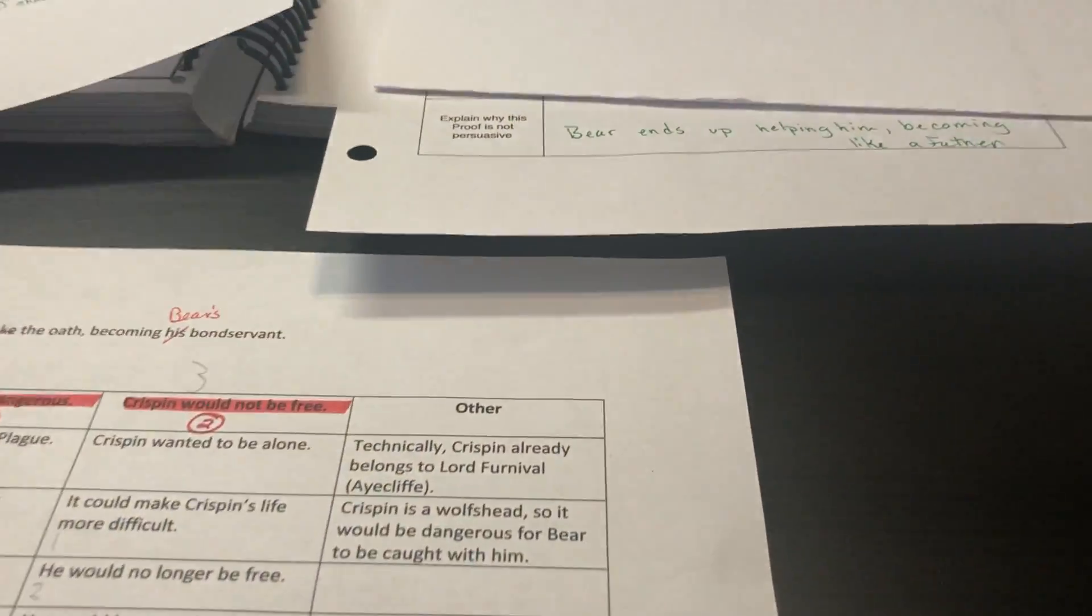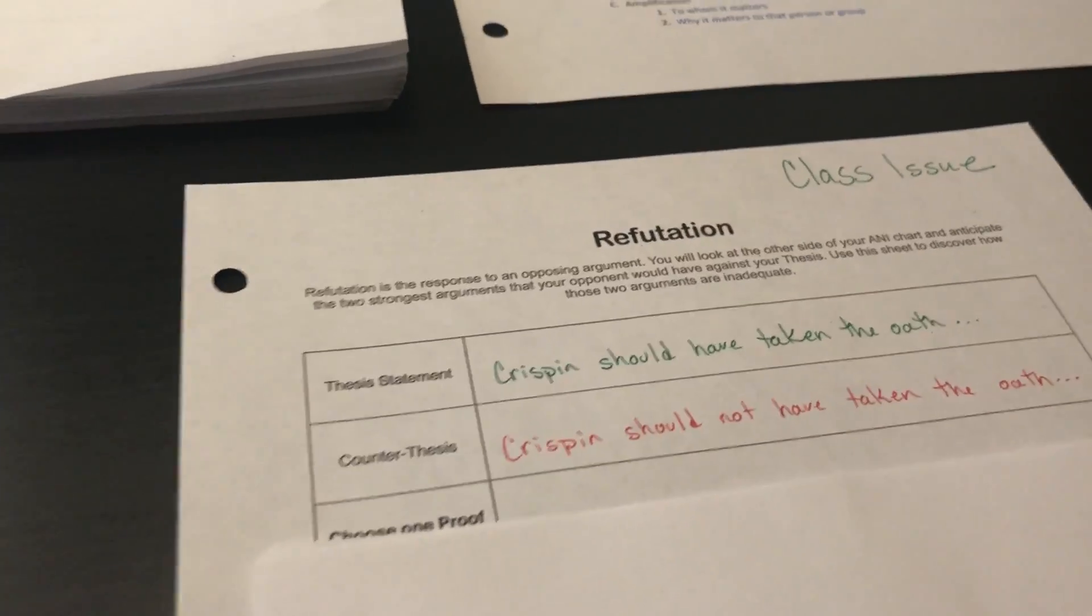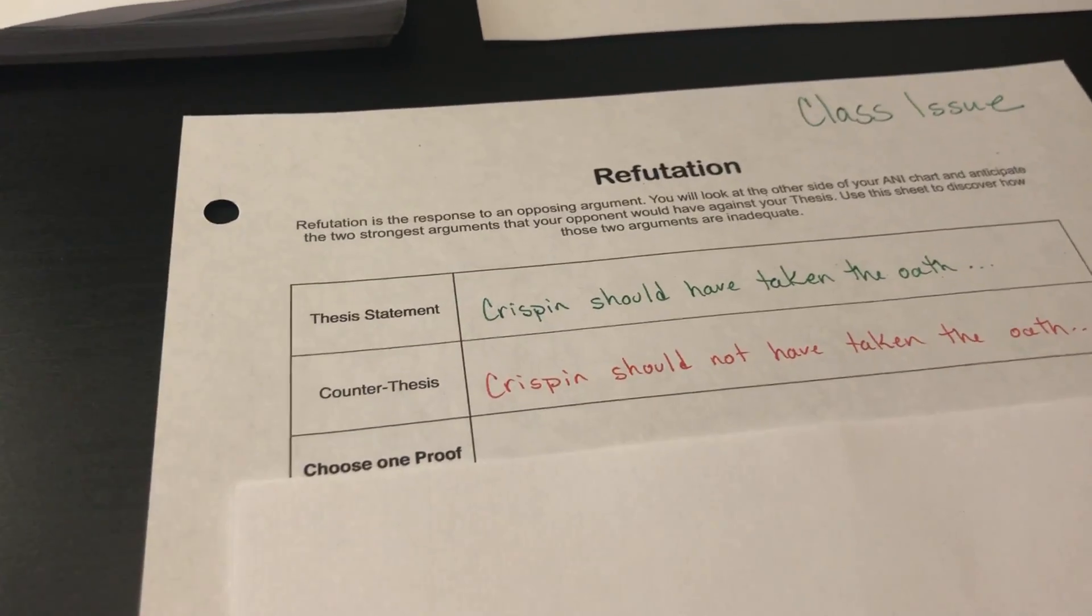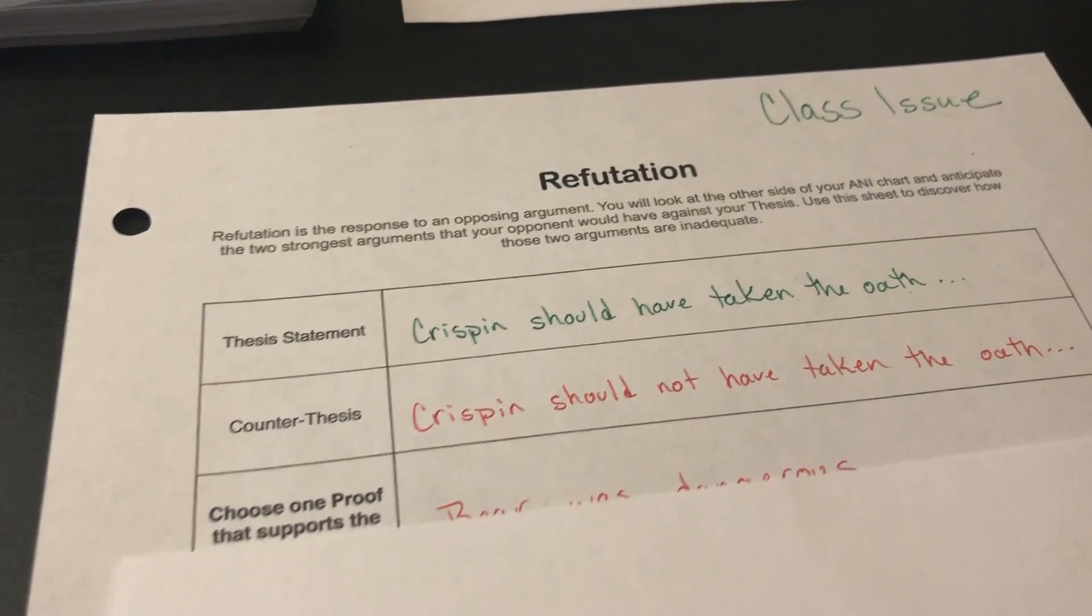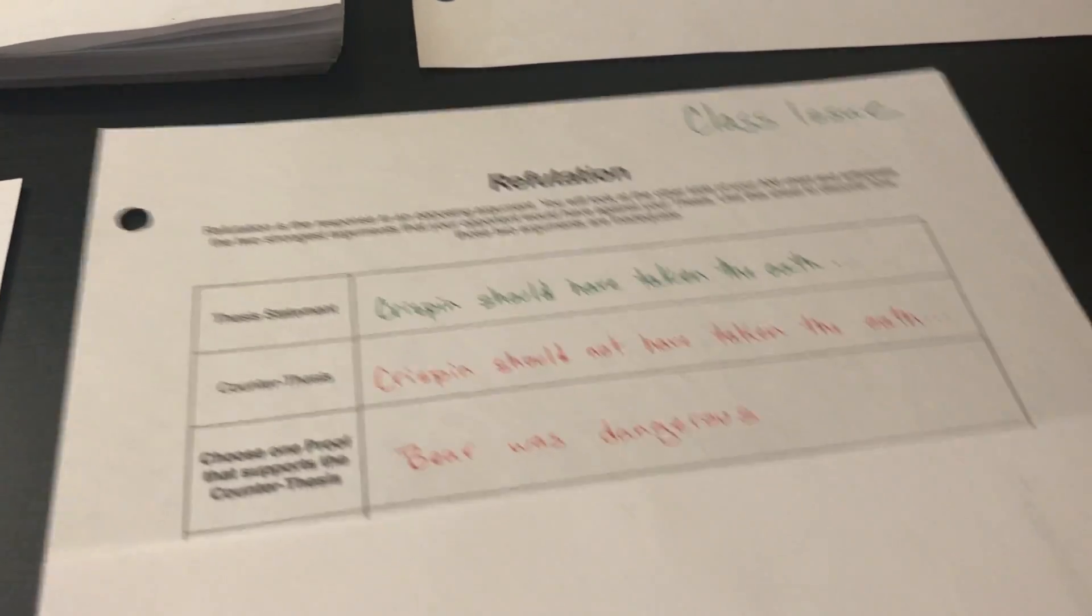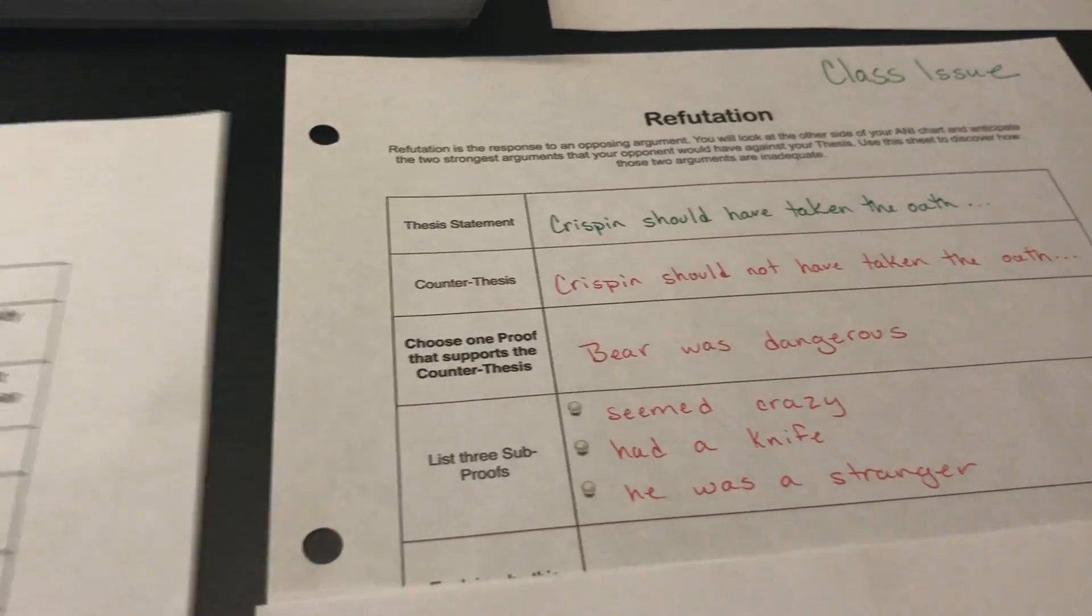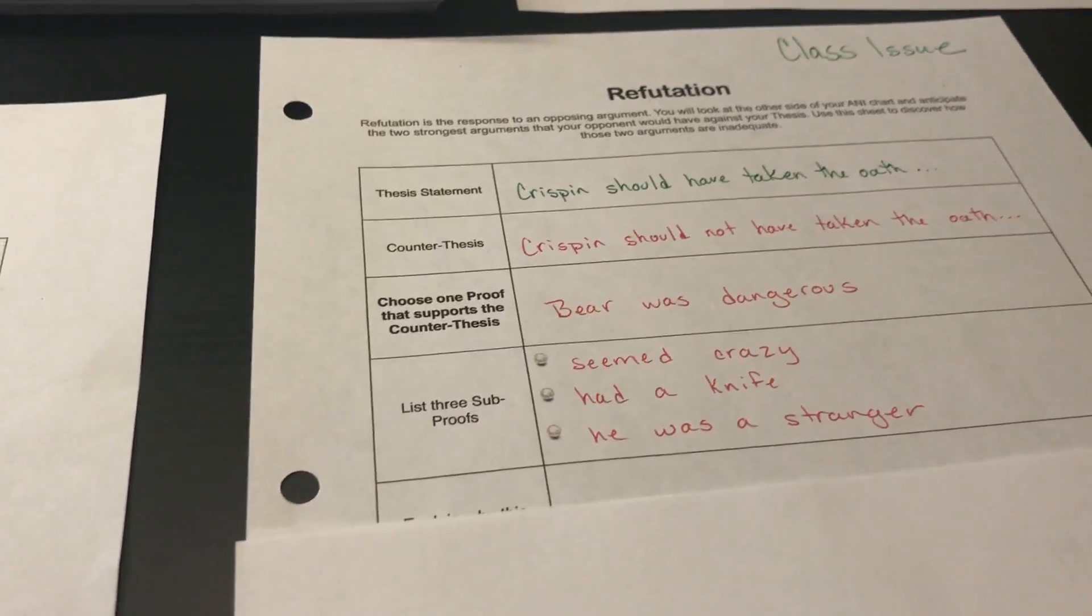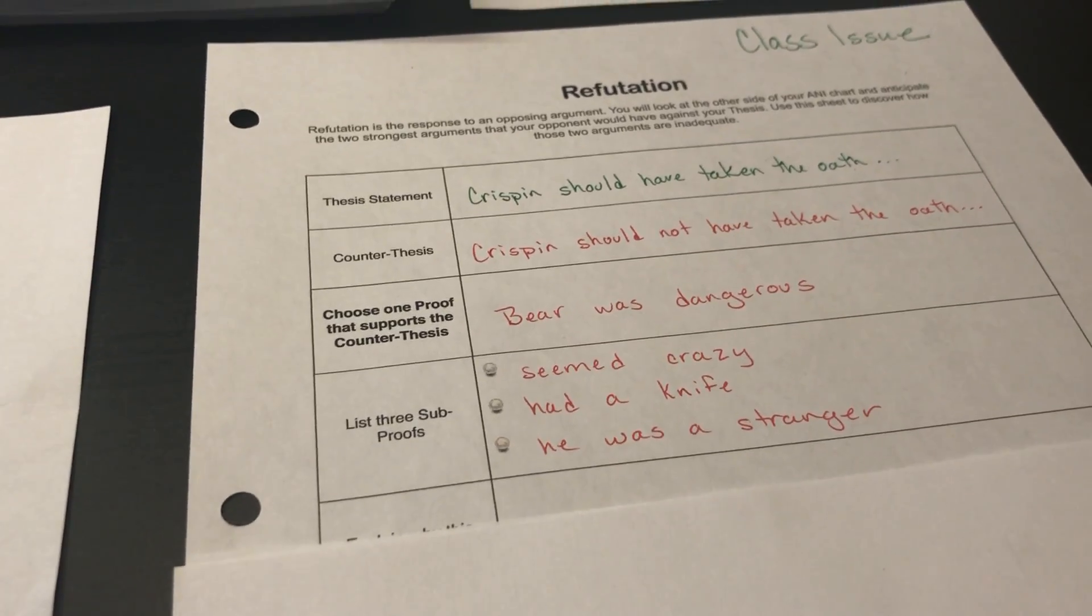So we walked through this chart right here. This is essentially the same worksheet that's in the workbook, just a little bit made to look like a chart. We have our thesis statement, our counter thesis. And we chose, first and foremost, that Bear was dangerous. Out of all of our reasons in the dangerous column, these were the three that we picked: he seemed like a crazy man, he had a knife, and he was a stranger. And we know we're not supposed to really fully trust strangers.